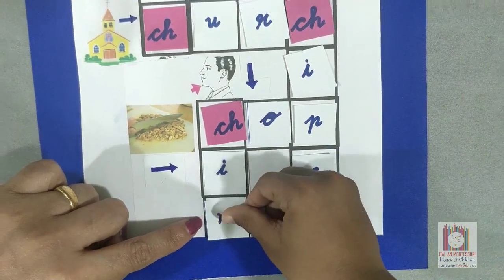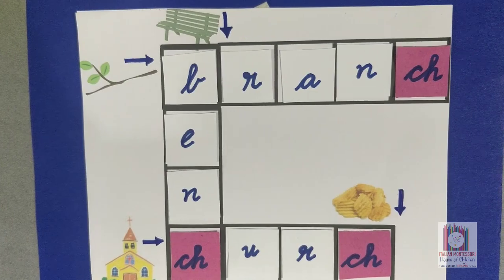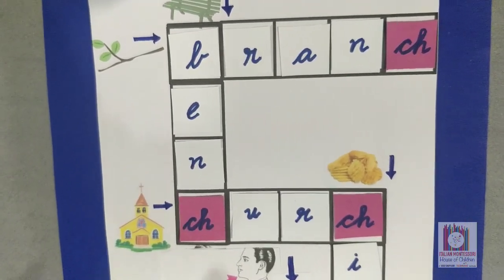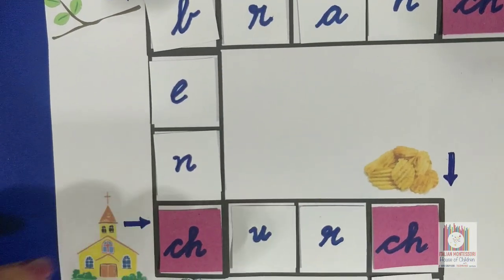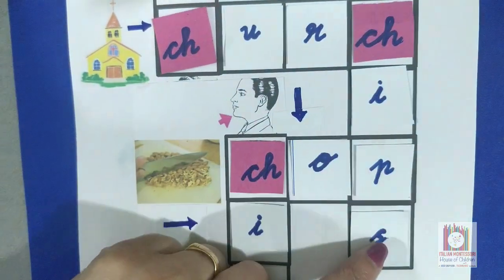Chin. Well done, Nathan. Let's read the words that we found by solving this crossword. Branch, bench, pinch, church, chips.